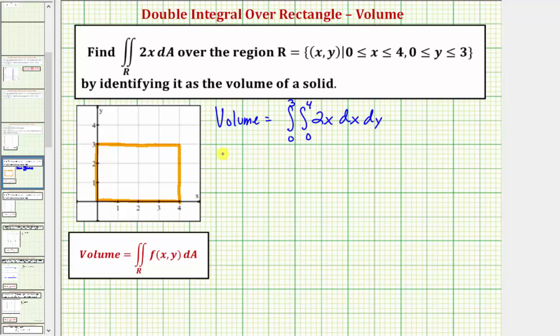We can also write this as the volume is equal to the double integral of two x. If we integrate with respect to y first, we integrate from zero to three. Then with respect to x, we integrate from zero to four.